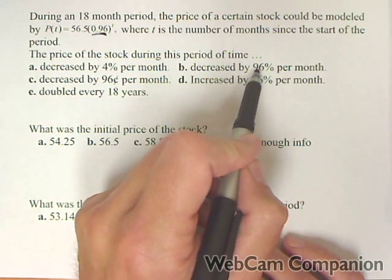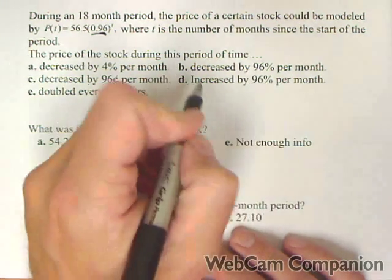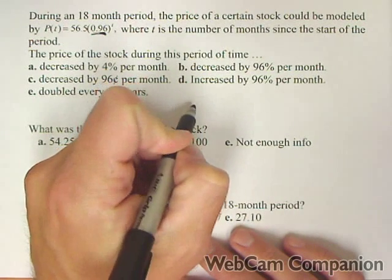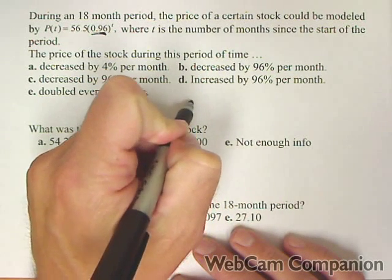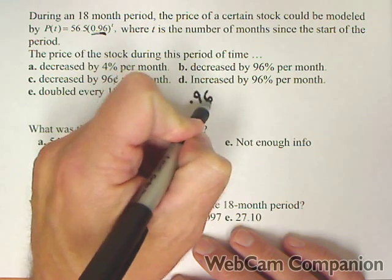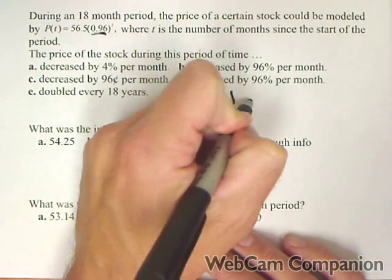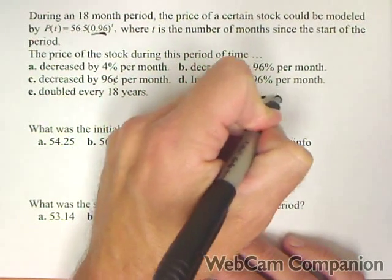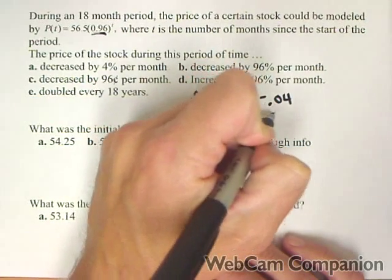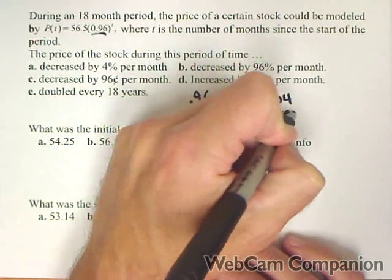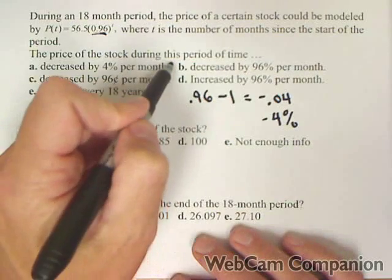Be careful, it's not decreasing by 96%. To get your rate, you're always going to take your base, so 0.96 minus one, and we get negative 0.04. It's actually decaying by 4% each month.